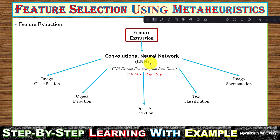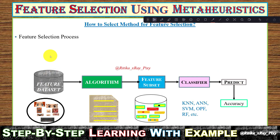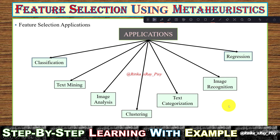For feature extraction, we can use CNN to extract features from raw data — applicable for image classification, object detection, speech detection, text classification, and image segmentation. The feature selection process involves: starting with a feature dataset, applying an algorithm to obtain a feature subset, passing it through a classifier, and performing performance evaluation to check accuracy.